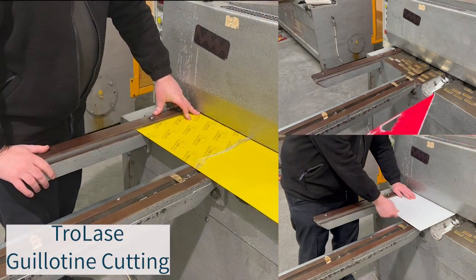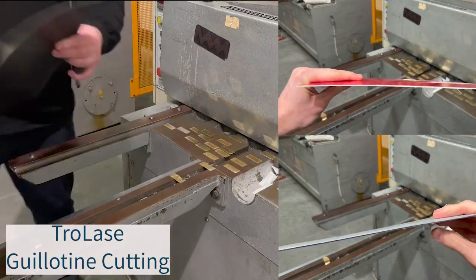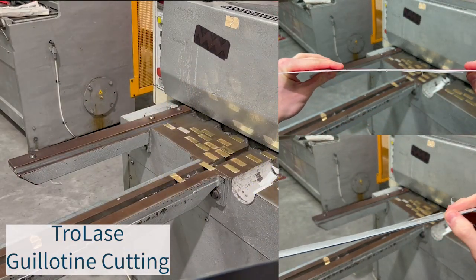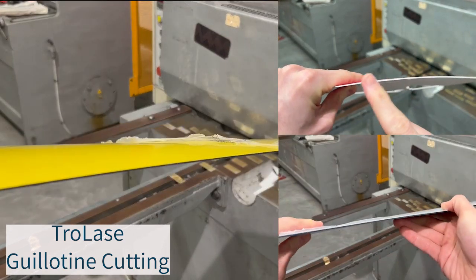The first test we will be performing is guillotining the materials to see what the finished edge is like. When cutting the Trotec you can see that the edges are not completely smooth though much of this can be easily removed.